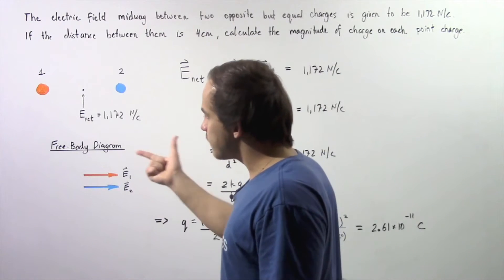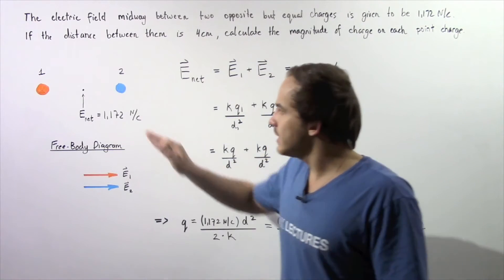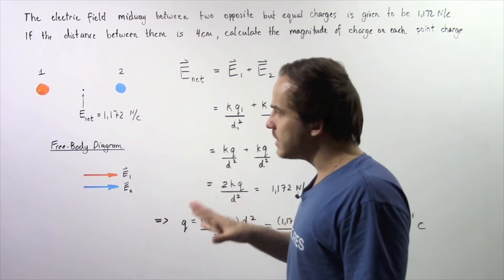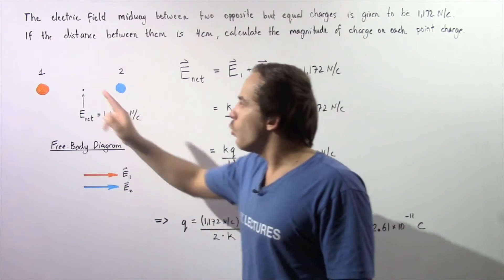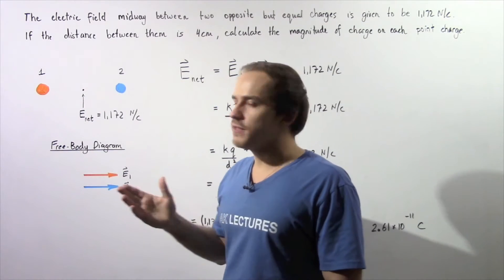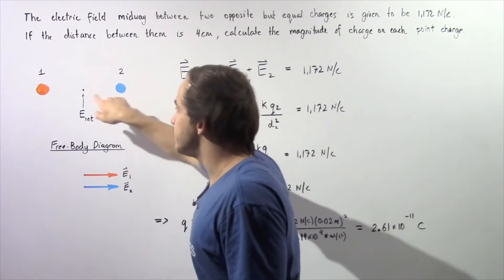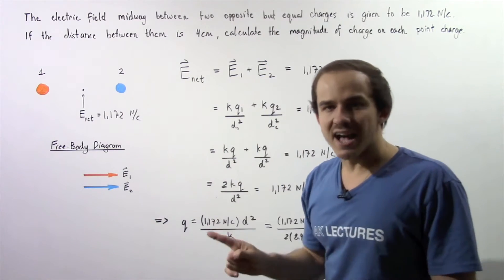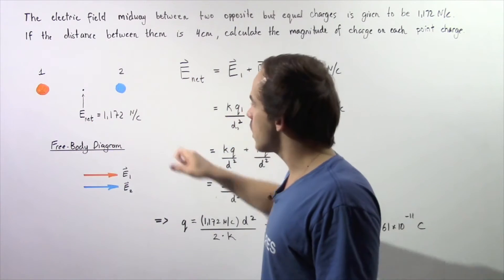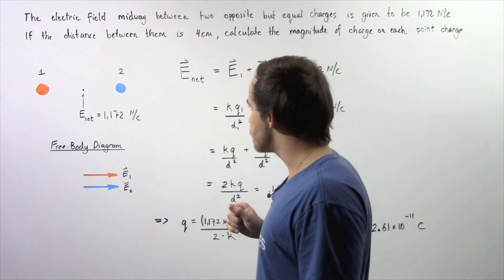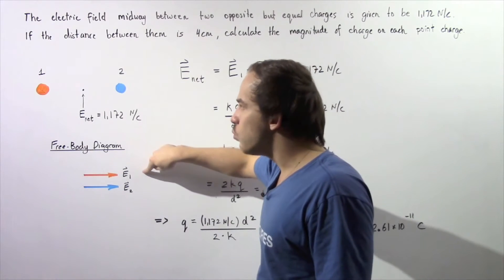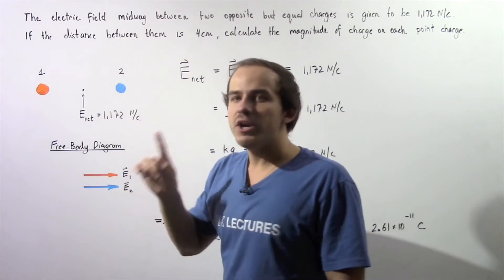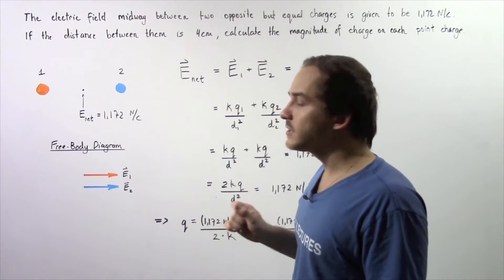Let's draw the free body diagram for the electric fields acting midway between our two point charges. We have two point charges, which means we're going to have two electric fields. Now, which one of these is positive and which one is negative? We are told that the magnitude of the two charges is exactly the same, but they have opposite signs.